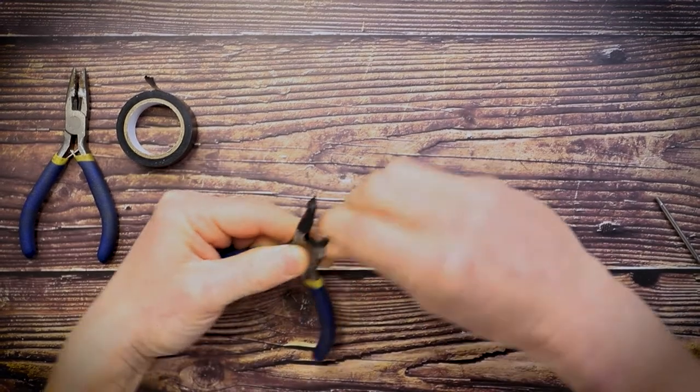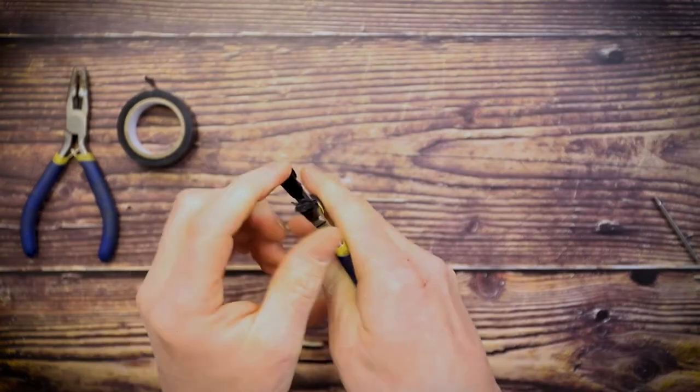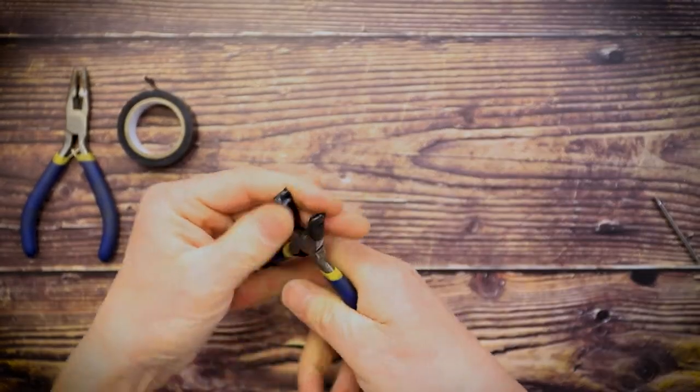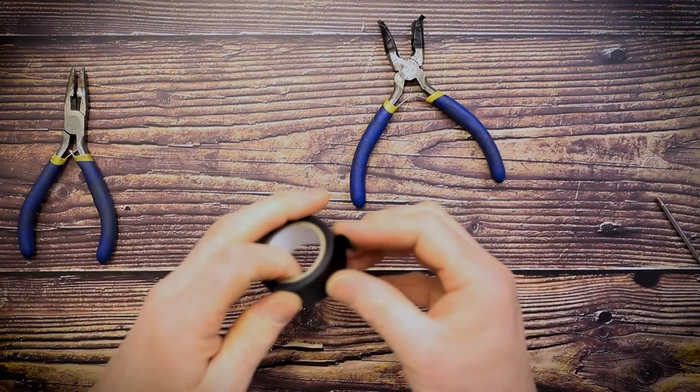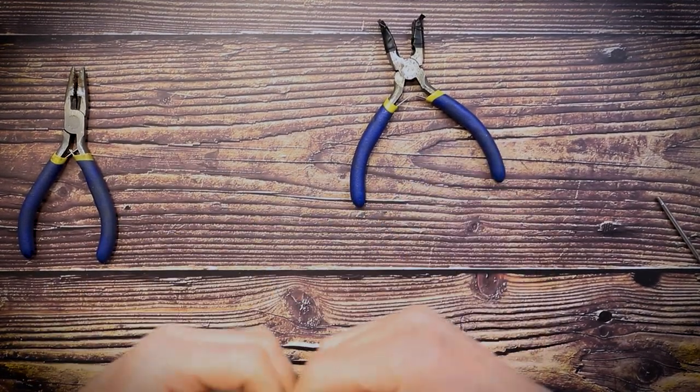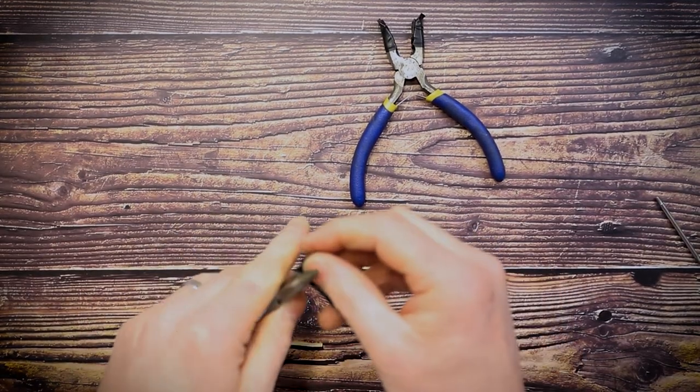But not just that side—I'm going to do both sides. So the teeth on this set of pliers are wrapped and I'm going to do exactly the same on my other set of pliers.